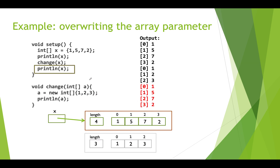If we print that out to our console, we'll get the three values from the new array. But when we return to our setup function and print out the x array, it will print the original array values: 1, 5, 7, 2. If you create a new array inside a function using the same name as the parameter, you are essentially overriding the link to the original array. This probably doesn't make much sense because why would you pass in the array if you're not going to do anything with it?